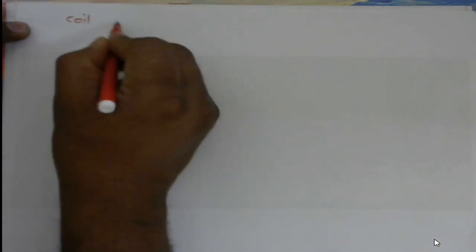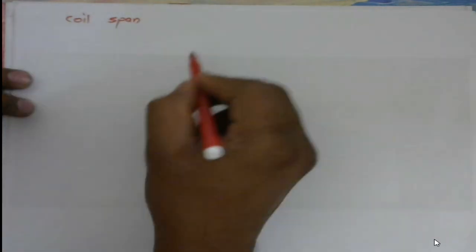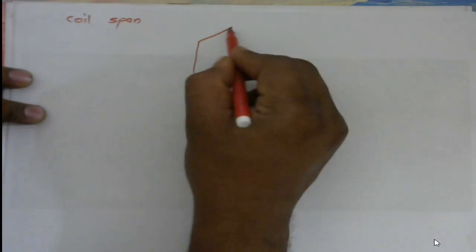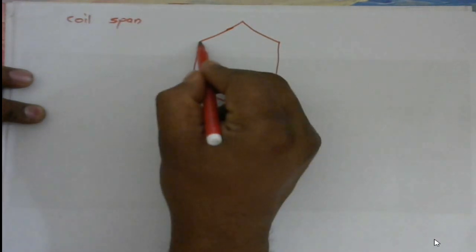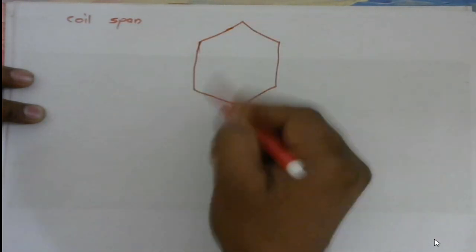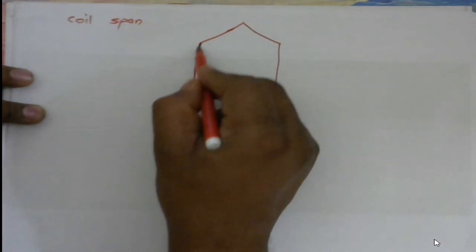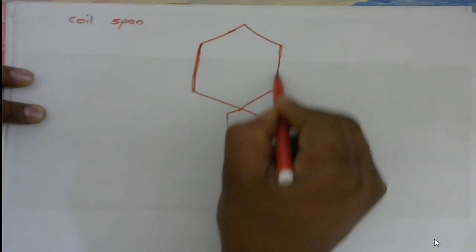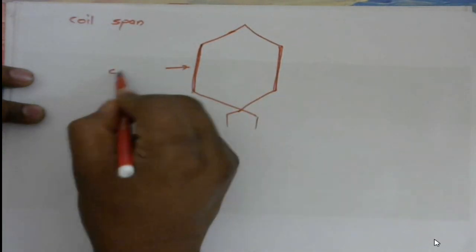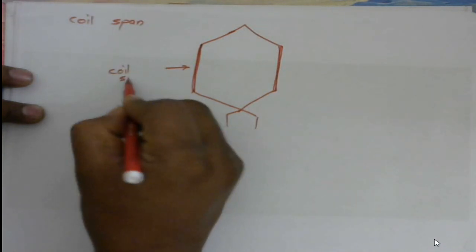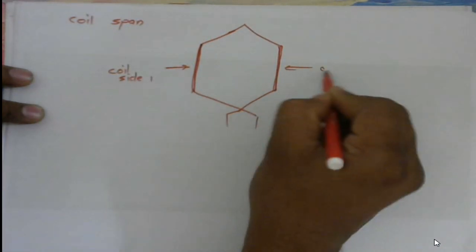After this, let us talk about coil span. So if we consider this is a coil, instead of showing number of turns I will show by a single line. Let us assume that this one is having n number of turns. This coil side is also having n number of conductors. So this is coil side one, and this one is coil side two.